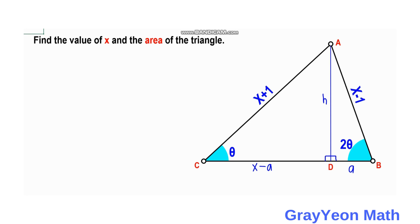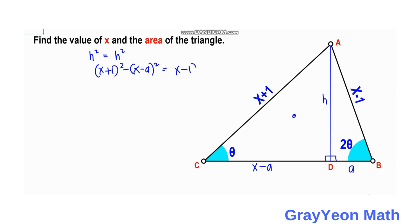By the Pythagorean theorem, since both triangles share the same height H, we can set H squared equal to H squared. For the left right triangle with hypotenuse X plus 1, we have H squared equals (X plus 1) squared minus (X minus a) squared. For the other right triangle with hypotenuse X minus 1, H squared equals (X minus 1) squared minus a squared. Expanding: X squared plus 2X plus 1 minus X squared minus 2aX plus a squared equals...